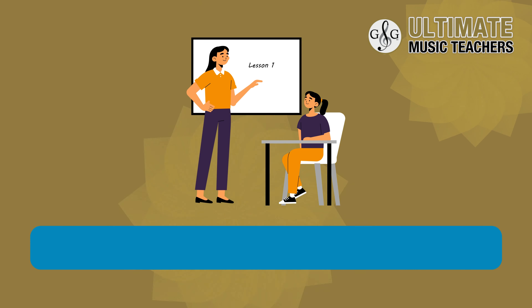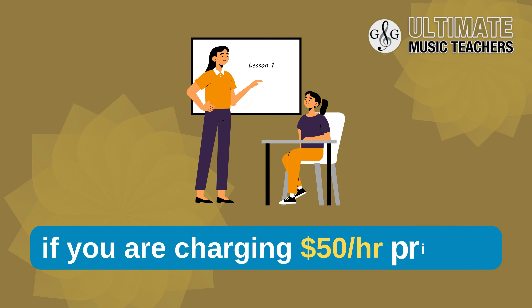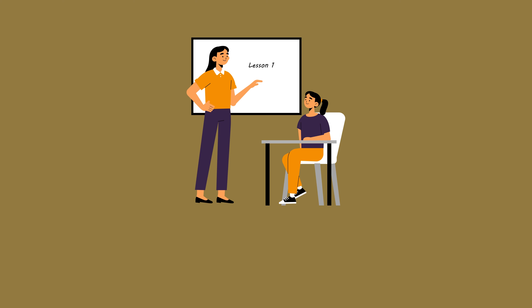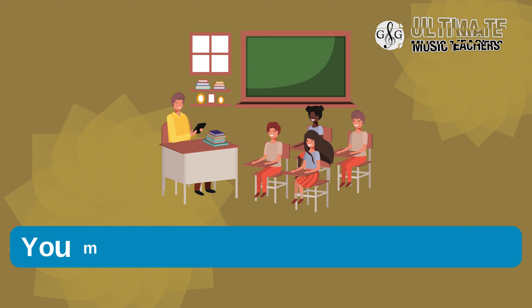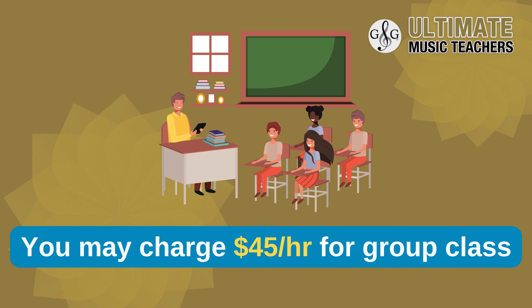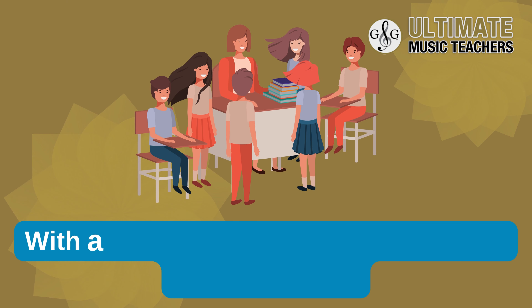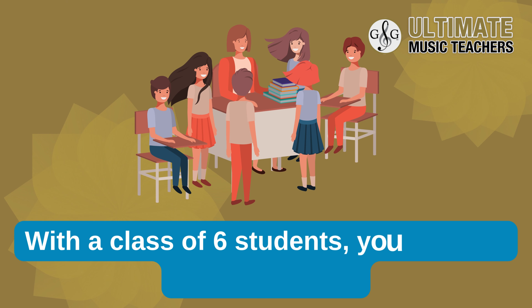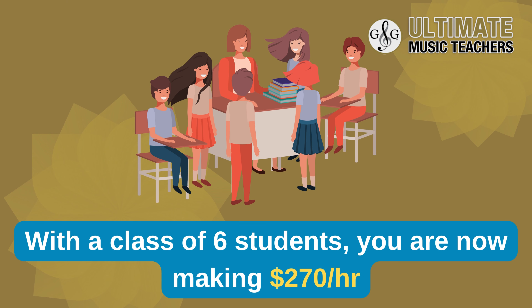When pricing your group theory club classes, charge a little less for a group class. For example, if you're charging $50 an hour for private, you may charge $45 an hour for a group class. And with a class of six students, you're now making $270 per hour — that's five times more money per hour than when you are teaching private.